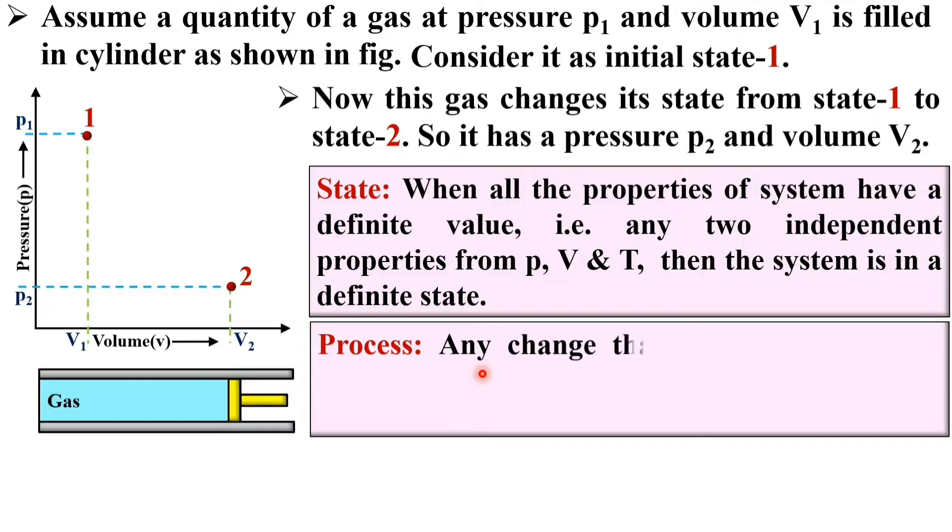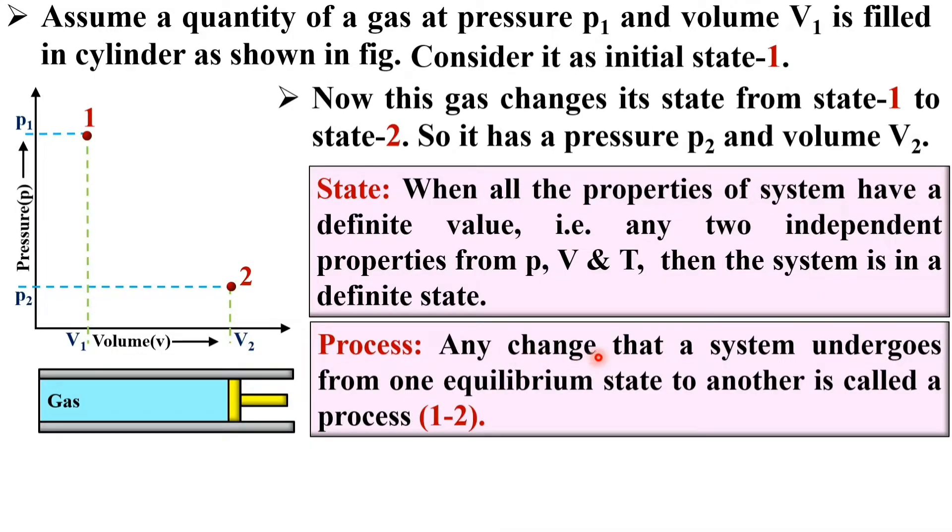Now, next one, process. Any change that a system undergoes from one equilibrium state to another is called a process. In this figure, you can see the system undergoes from one equilibrium state 1 to another equilibrium state 2. This is called the process 1-2.